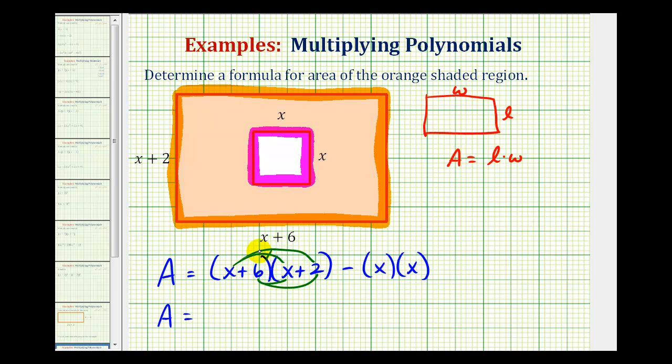Well, x times x would be x squared. Then we have x times two, that's plus two x, and we have six times x, that's plus six x, and then six times two, that's plus twelve, but then we have minus x squared.